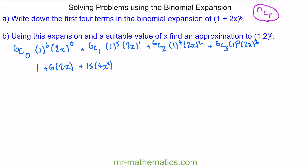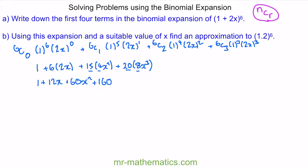For our fourth term, 6C3 is 20. 1 to the 3 is 1. And then 2x cubed becomes 8x cubed, so we have 20 lots of 8x cubed. Tidying up further: 6 lots of 2 gives 12x; 15 lots of 4 gives 60x squared; and 20 lots of 8 gives 160x cubed.